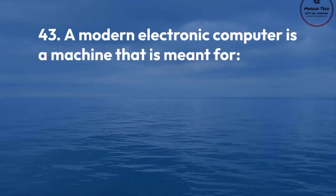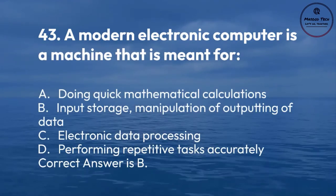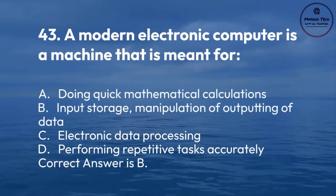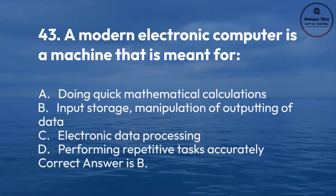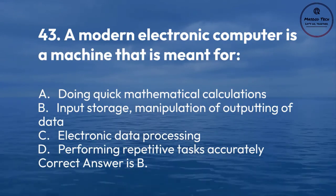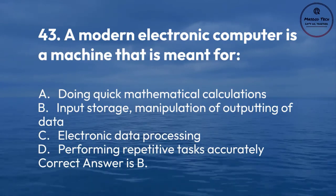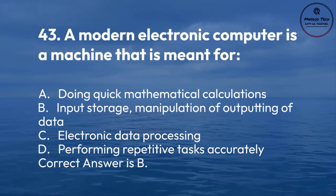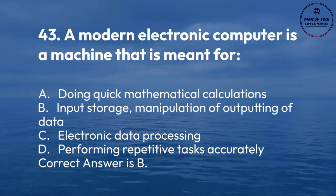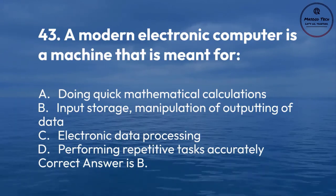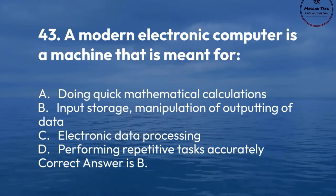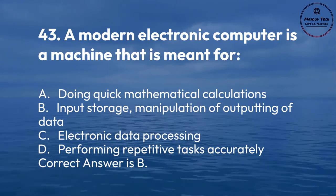Number 43. A modern electronic computer is a machine that is meant for: A. Doing quick mathematical calculations. B. Input, storage, manipulation and outputting of data. C. Electronic data processing. D. Performing repetitive tests accurately. Correct answer is B.